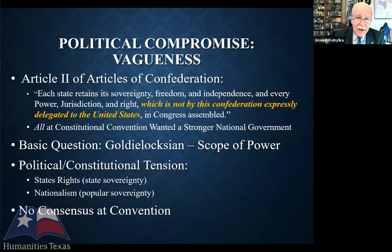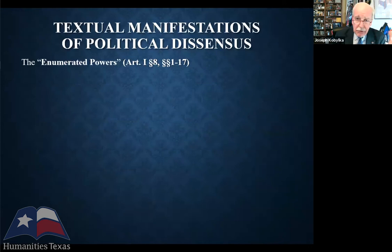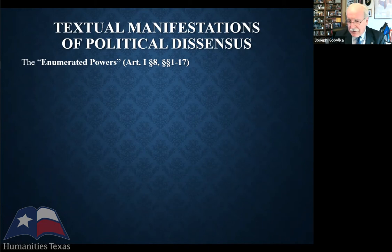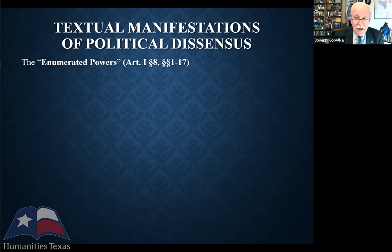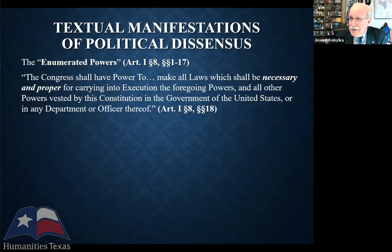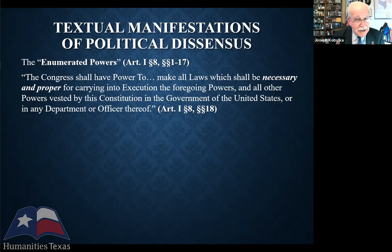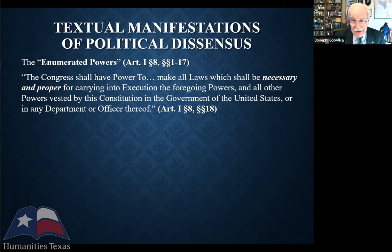So they wrote the Constitution. The enumerated powers in Article 1, Section 8, subsections 1 through 17, enumerate the powers of the national government — particularly Congress — such as declaring war, raising taxes, regulating commerce. These are written down; you know the government has them because they're in Article 1, Section 8. But subsection 18 is the necessary and proper clause, which is constitutional affirmation of implied powers. The national government has all specifically enumerated powers and those necessary and proper for carrying them into execution.